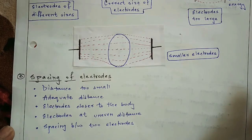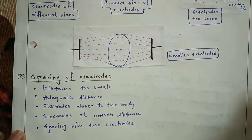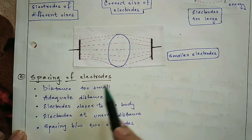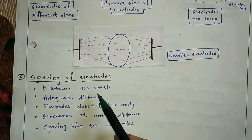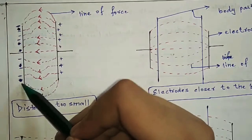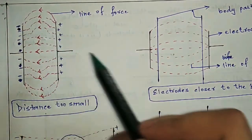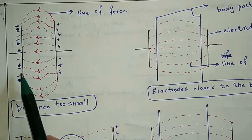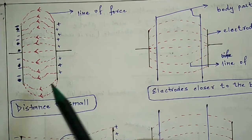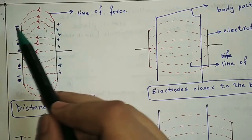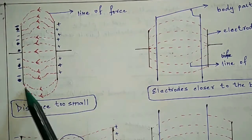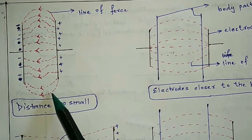Now it comes to the spacing of the electrode — how much space between two electrodes. If the distance between the two electrodes is too small, the line of force at the edge of the electrode spreads out, which is obviously a waste of energy. So the distance between the electrodes should not be too small.